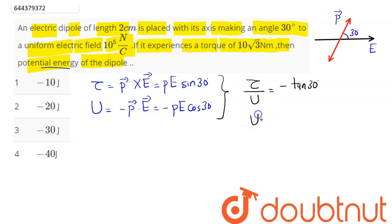Hence the value of potential energy comes out here as tau divided by minus of tan of 30 degree. Now torque is given as 10 root 3, so this is 10 root 3 divided by, we have here tan 30 as 1 by root 3...